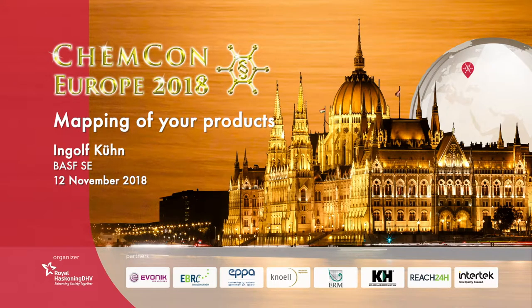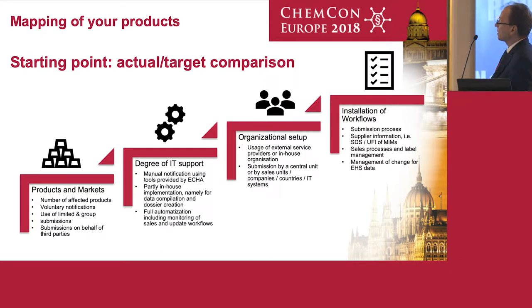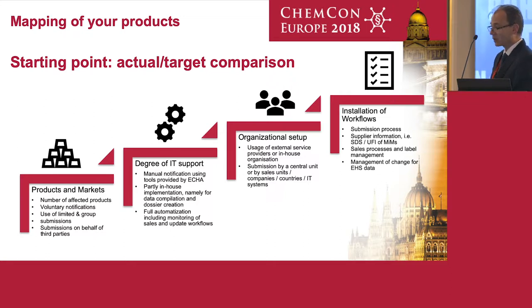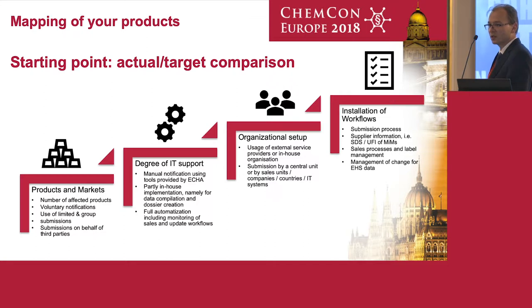Mapping of your products for the upcoming poison center notification: companies should start their implementation right now. The first step towards preparation is building up a substance or product inventory, because this determines the necessary measures you have to take in order to enable your company to file the notifications in time. Your product inventory is governed not only by the number of products and markets you are serving, but also it's a strategic decision by each legal entity.